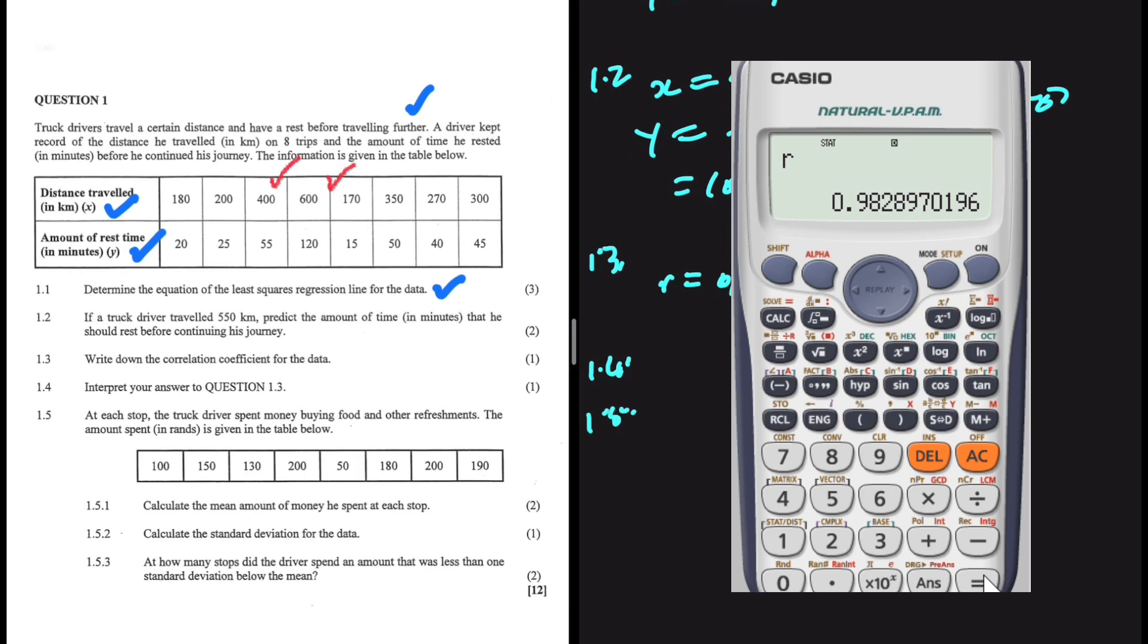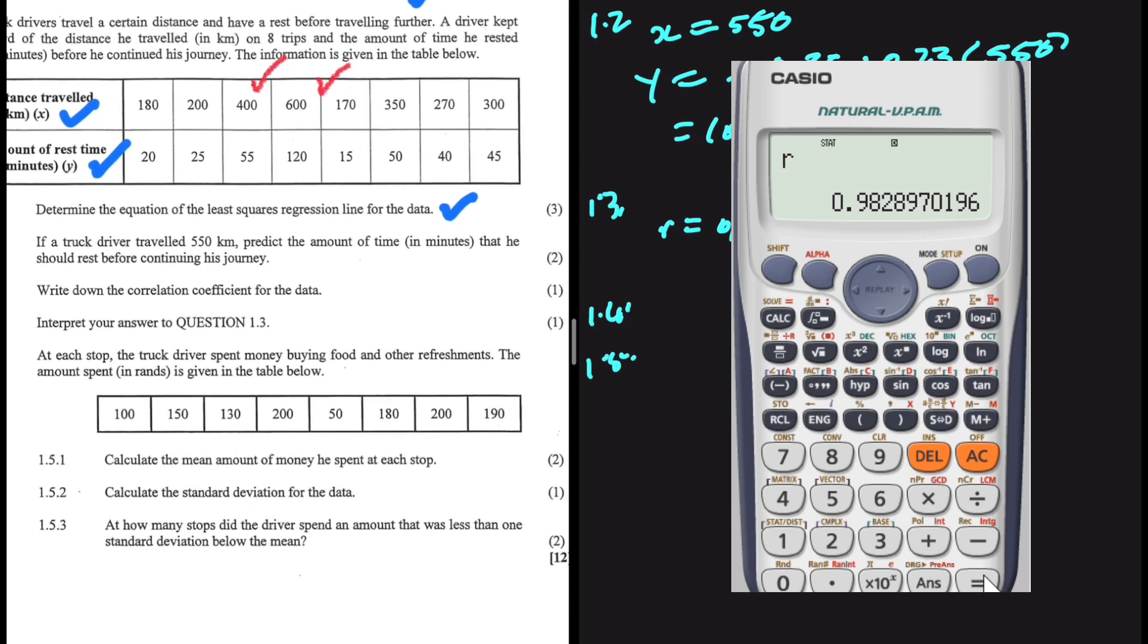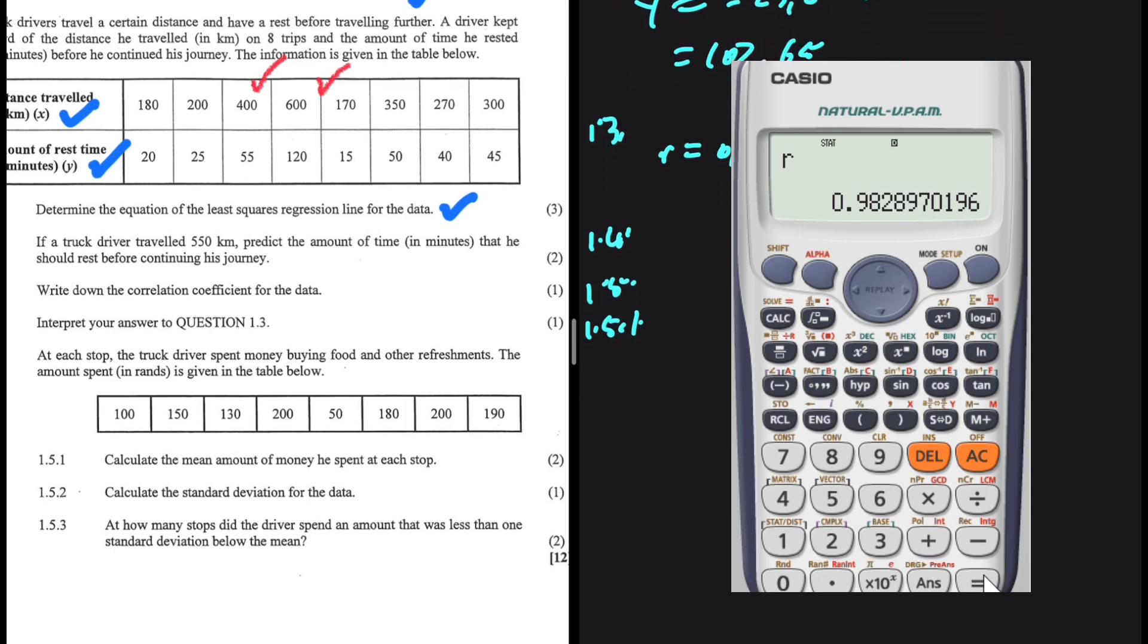That is 1.4. On the other hand, 1.5. At each stop, the truck driver spent money buying food and other refreshments. The amount spent in rent is given in the table below. We have the amounts. And the first question, 1.5.1. Calculate the mean amount of money he spent at each stop. Again, we can use our calculator here. Let me show you how. So we press AC. Now we want to change our data. So we're going to press the mode setup. And then we press 3 for stat. And now we press 1 for one variable. We are only interested on one variable now.